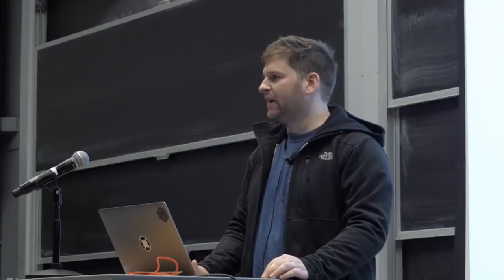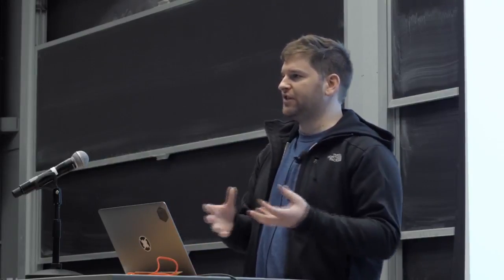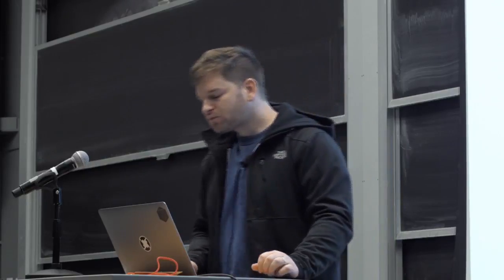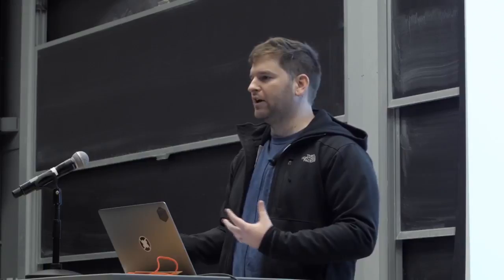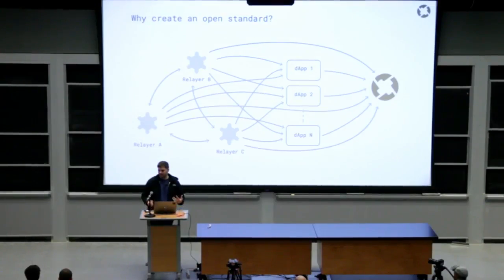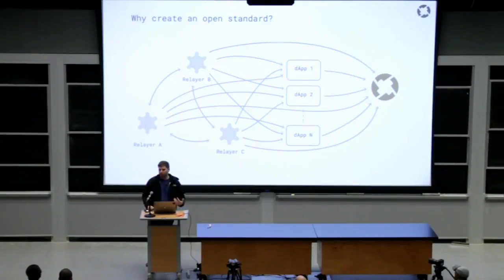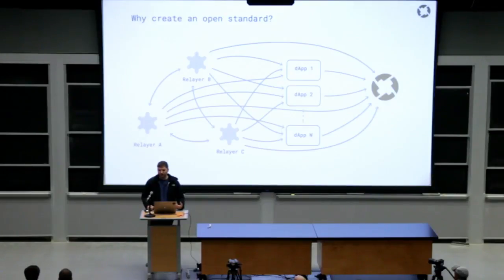Why create an open standard rather than having a bunch of different custom and proprietary implementations? The most obvious reason is that when all of these different exchanges are speaking the same language, you can create a global network of interconnected exchanges, marketplaces, and dApps, and it allows them to seamlessly pool and share liquidity. It also allows for more robust and standardized developer tools. The 0x team has created the 0x JavaScript library and the standard relayer API, and these tools make it very easy for anyone to quickly spin up their own decentralized exchange, taking a lot of the upfront work out of the equation.